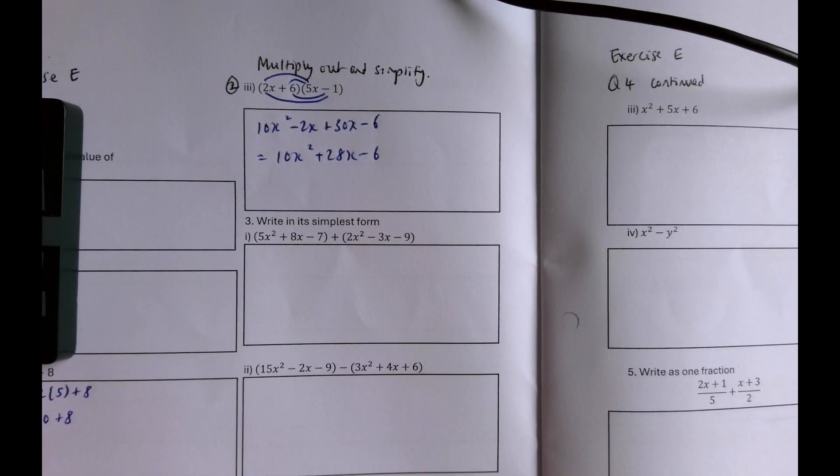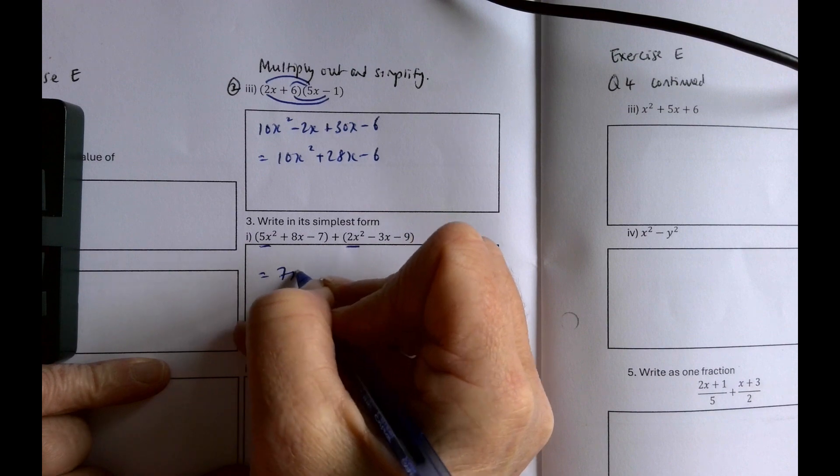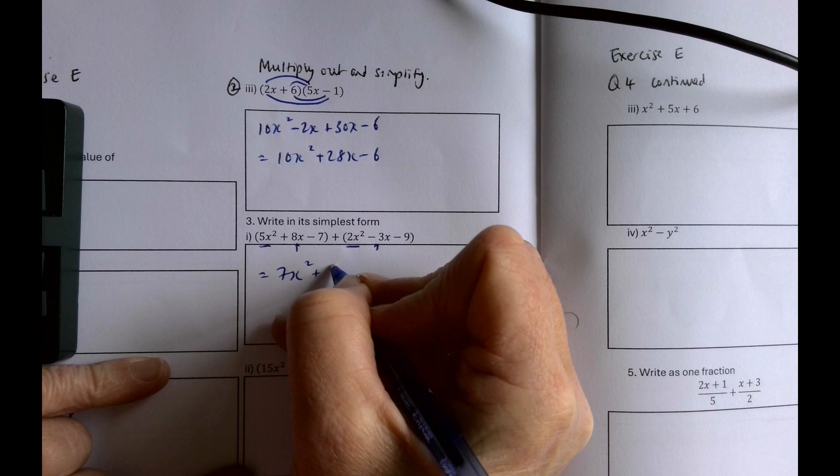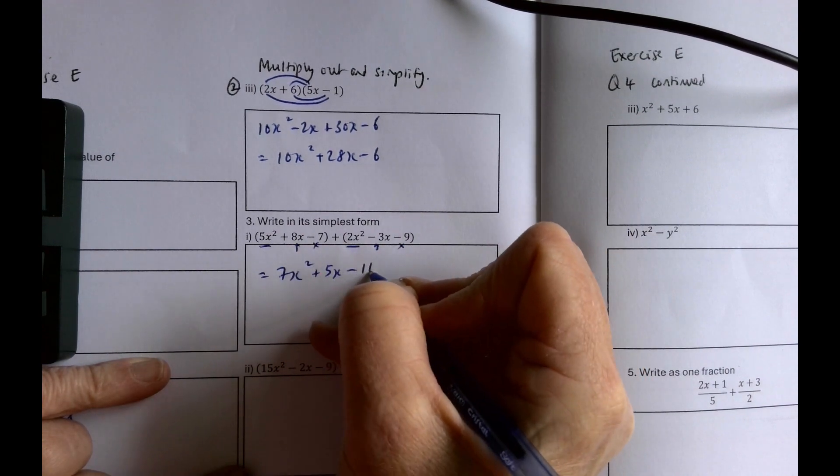And multiply out two brackets. Okay, 5x squared and 2x squared is 7x squared. There's a plus, so I'm not multiplying, I'm just adding. 8x and minus 3x is 5x, and minus 7 and minus 9 is minus 16.